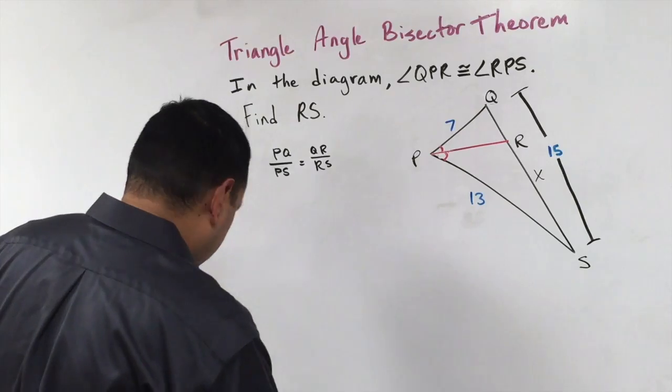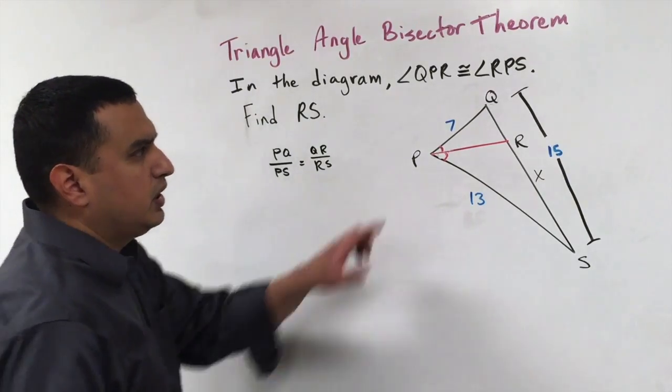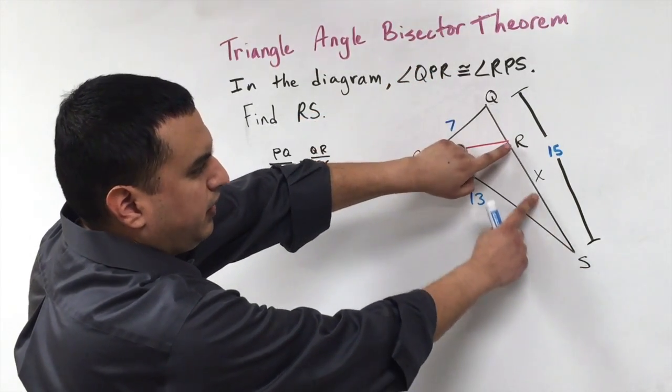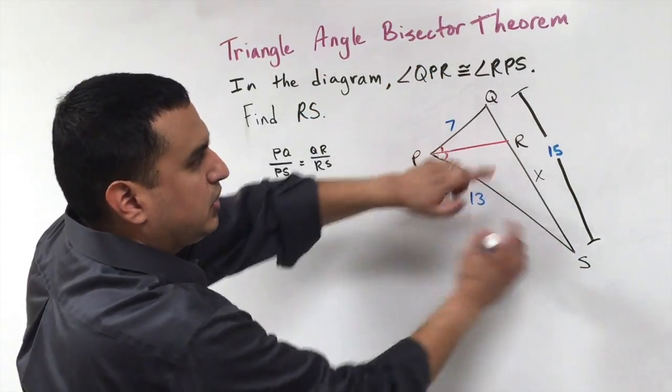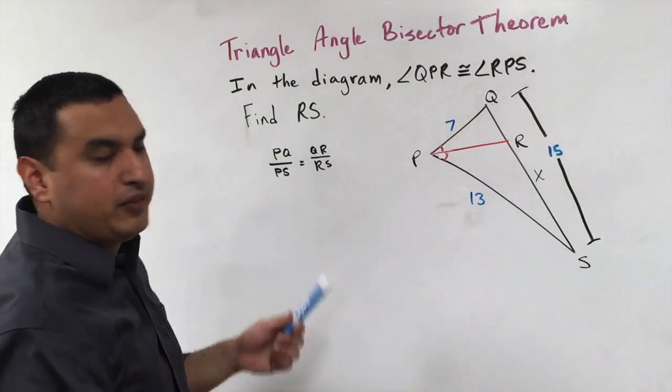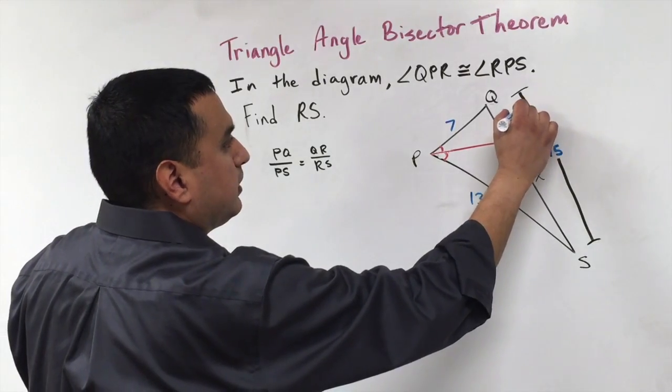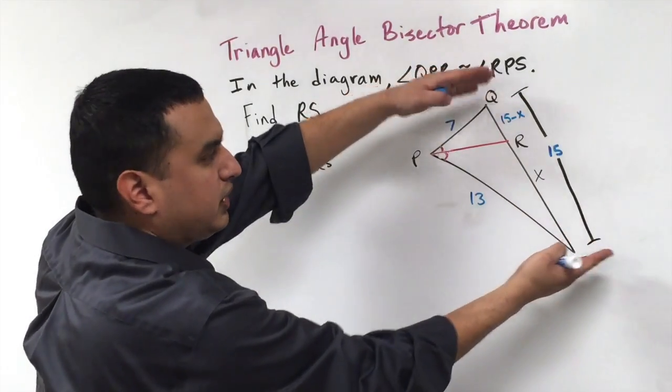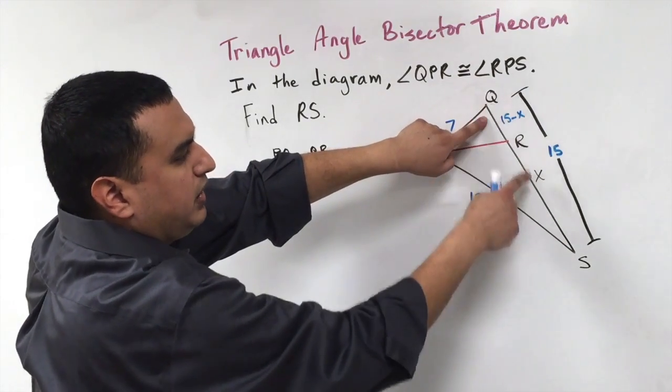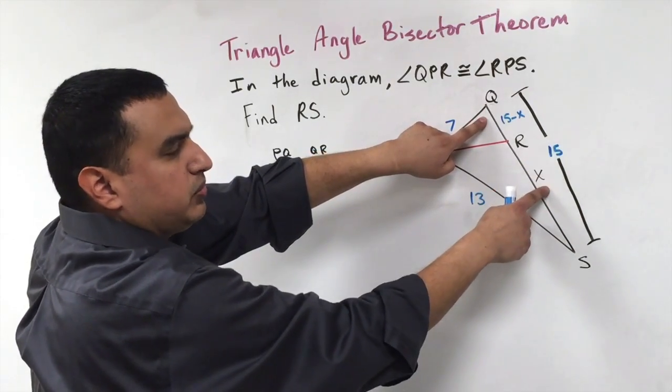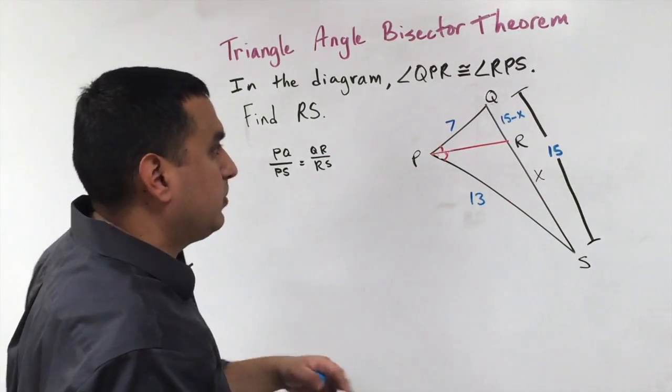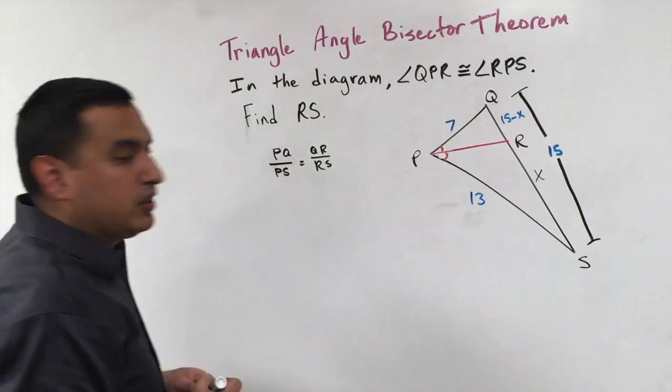So the only little slight difference or complication in this is that they're giving me this entire length being 15, and this distance right here is X. So that means this segment QR, I'm going to have to write that as 15 minus X. Because the 15 is the whole length, I had no this much, so this piece is going to be whatever X is, or 15 minus whatever X is, to get this small piece. So it's just 15 minus X for now, we'll figure out what X is, so we can find RS.